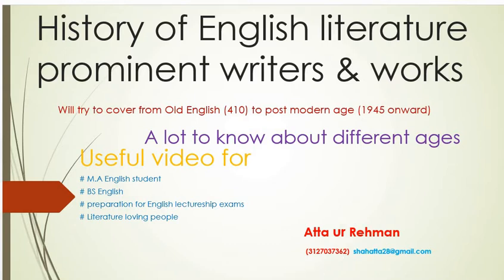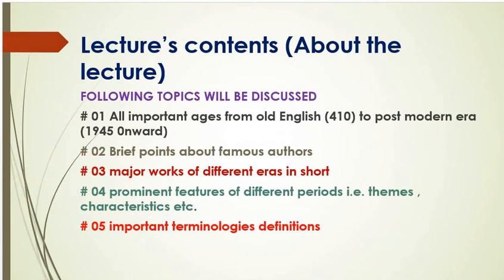Let's start our lecture. We are going to discuss the following topics: all important ages from Old English 410 AD to the Postmodern era 1945 onward; brief points about famous authors, writers, poets, and critics; their major works; and the prominent features of the different periods — that is, the themes and the characteristics.